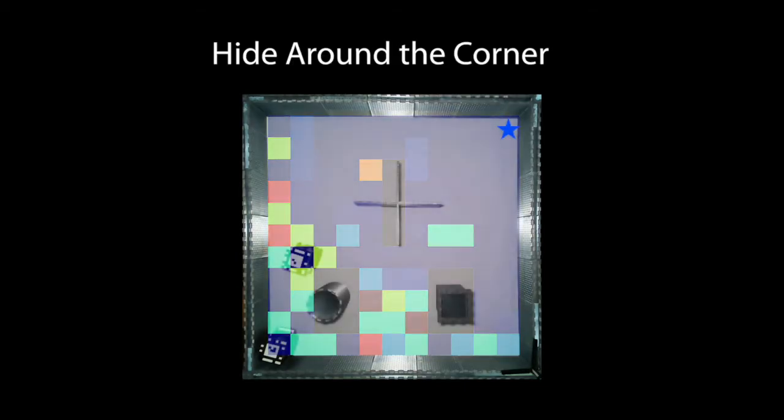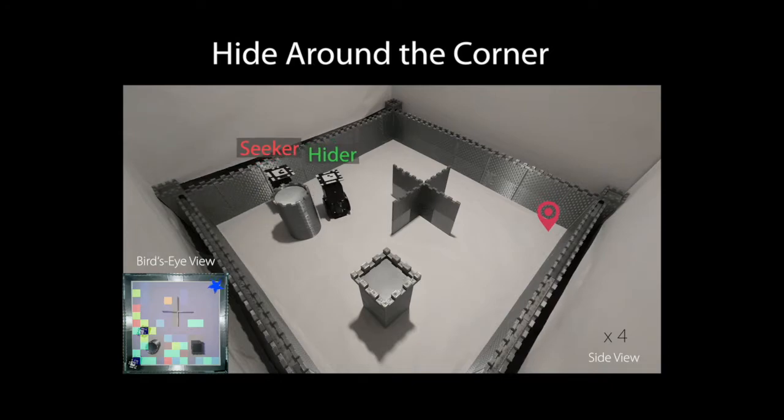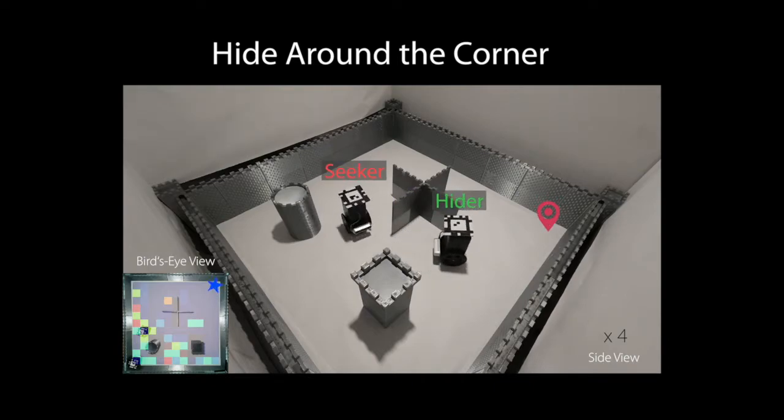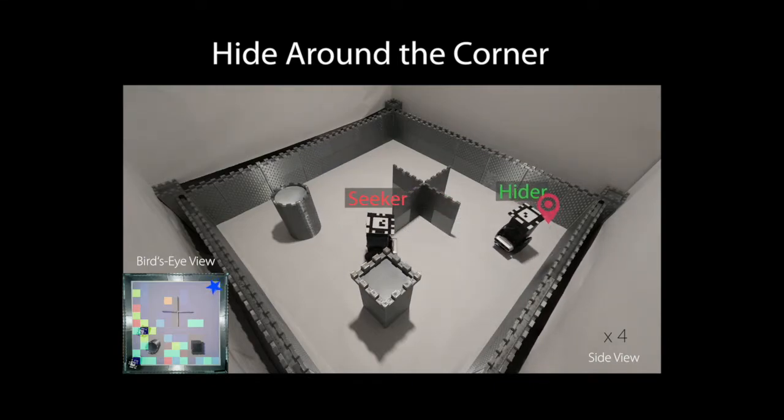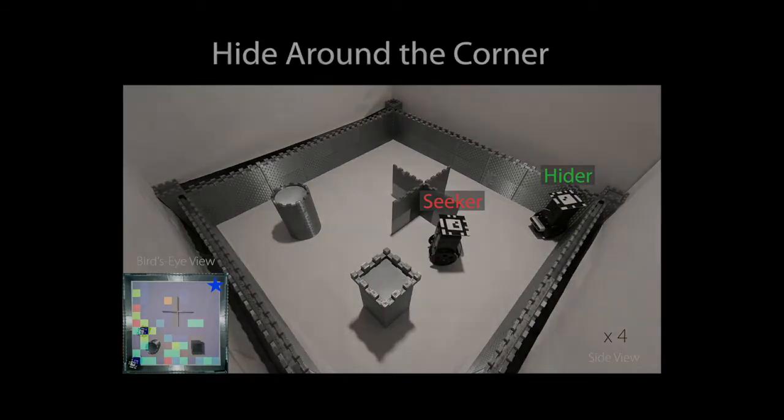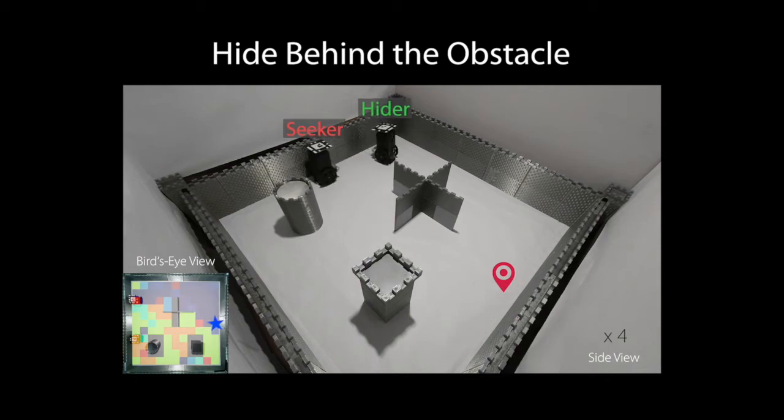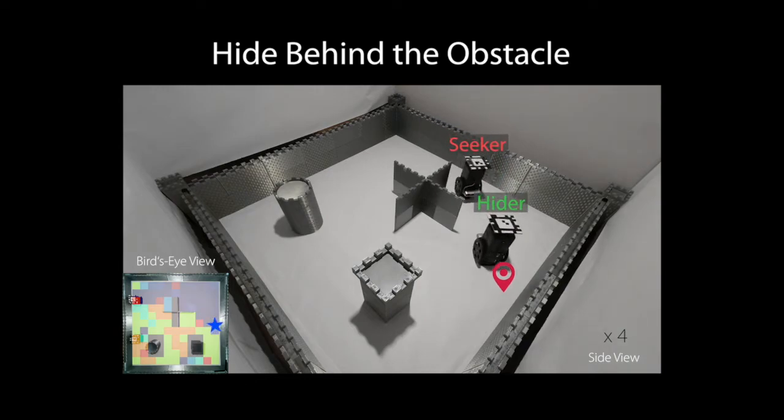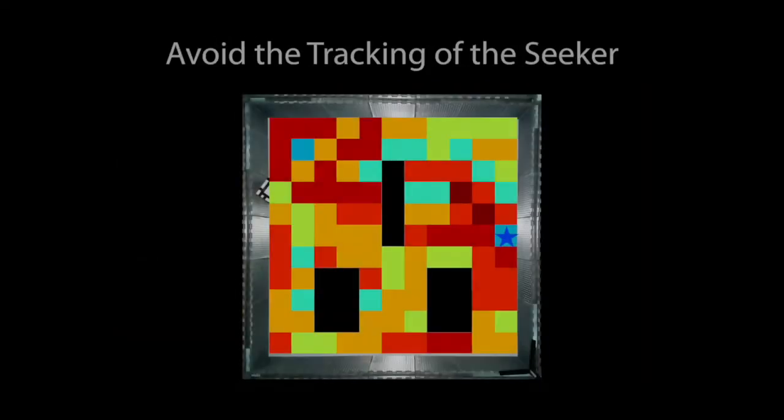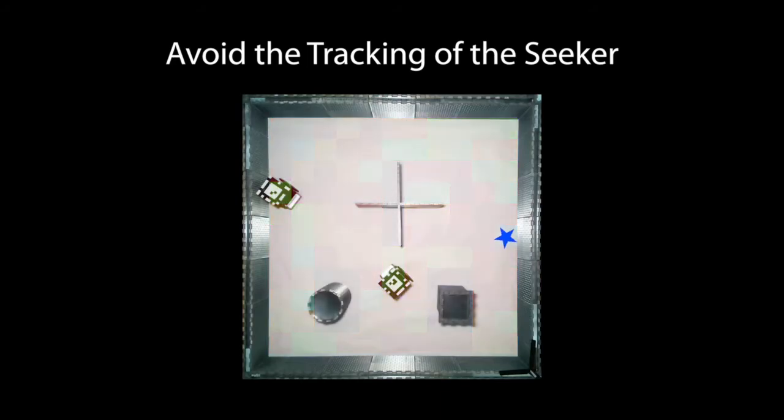Here, the hider robot hides around the corner, the hider robot hides behind the obstacles, and sometimes even completely gets rid of the seeker's tracking by using nearby obstacles.